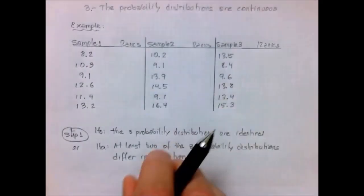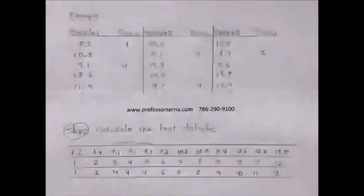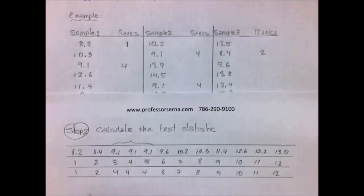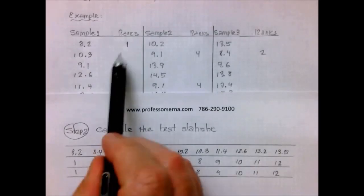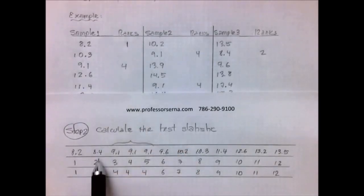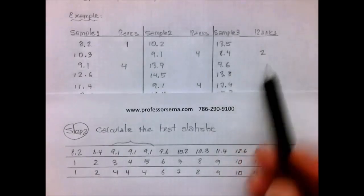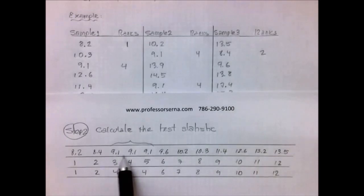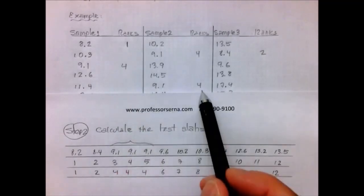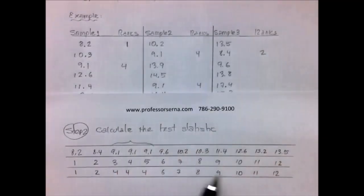So we found out that 8.2 gets rank one, so I'm going to put that one there. And that 8.4 got rank two. All these three 9.1s are going to get rank four. So I'm going to put rank four here, rank four there, rank four there. And keep on doing it with all the observations.